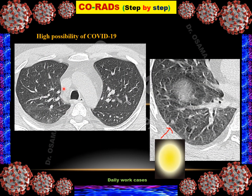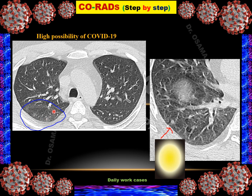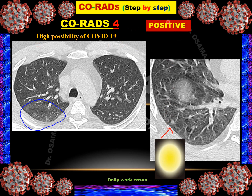Case 2: HRCT of the upper lobes showing subtle ground glass opacity based on the pleural surface, and presence of halo signs in the subpleural distribution. However, the abnormality is unilateral only, so we classify it as CO-RADS 4 — meaning high possibility of COVID-19. RT-PCR test was also positive for this patient.